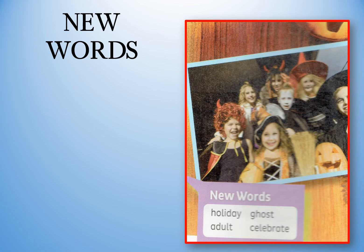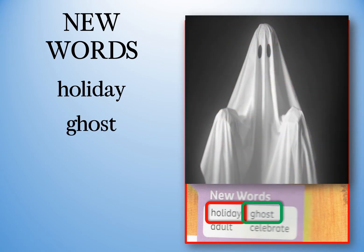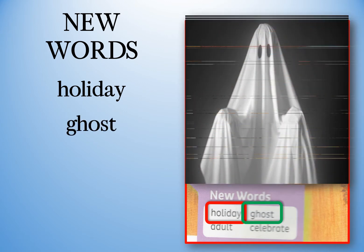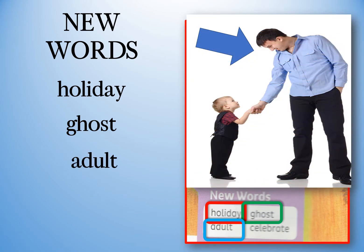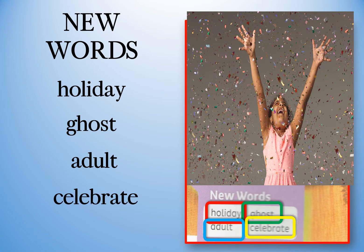Page 14 has a purple box with 4 new words to learn. Word number 1: holiday. Number 2: ghost. Number 3: adult — an adult is not a child; an adult is a grown-up. Number 4: celebrate — I celebrate my birthday; we celebrate with water.